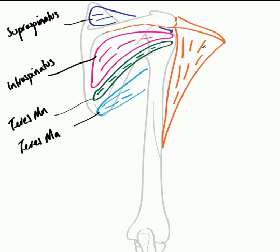The reason for drawing deltoid this way is to highlight an important space created by these muscles which allows the axillary nerve to pass through. The axillary nerve is a nerve coming from the posterior cord of the brachial plexus and it actually supplies deltoid muscle with its motor innervation. The space created by these muscles is called the quadrangular space, and to complete it we need to add in a further muscle — the long head of triceps.